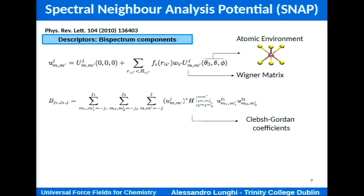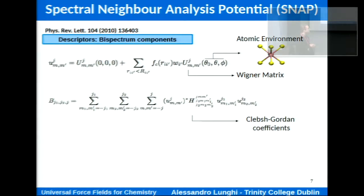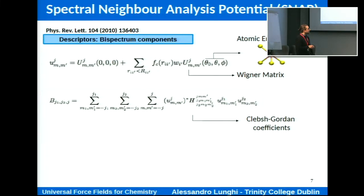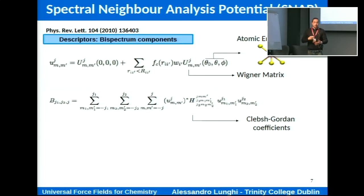The model we implemented is called the SNAP force field. It's a very simple machine learning implementation based on a descriptor called the bispectrum components, first designed in a 2010 paper. You start from the Cartesian coordinates of your system, choose a cutoff radius to gather all atoms within that radius describing the atomic environment, and plug these coordinates into a relation to get a representation of the environment. You then make this representation rotationally invariant by averaging over possible orientations in space, yielding the bispectrum components with the correct symmetry features.